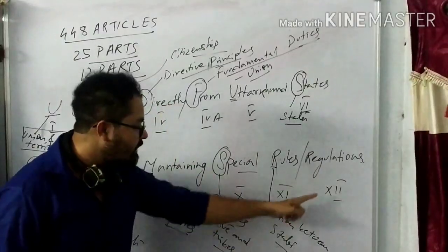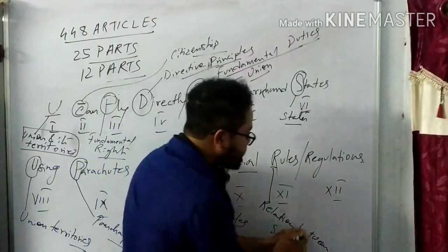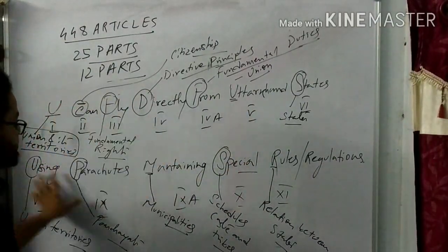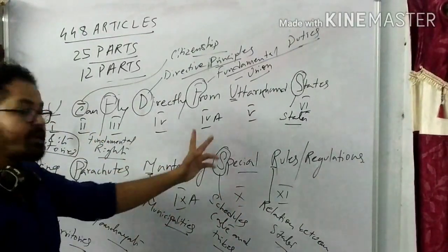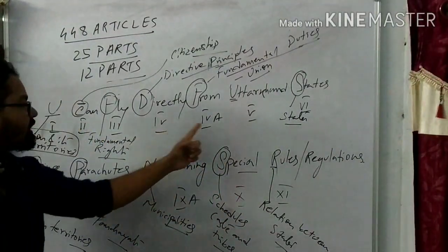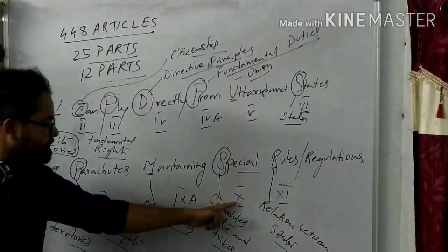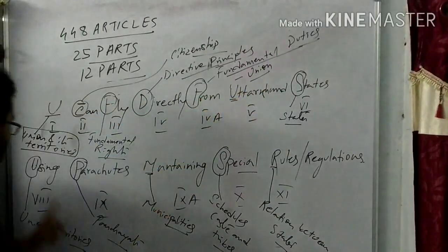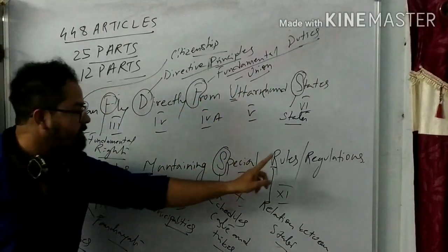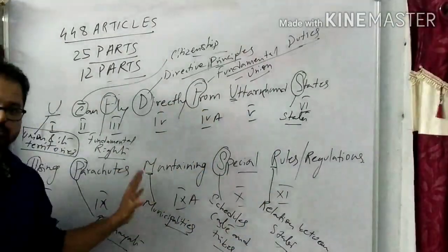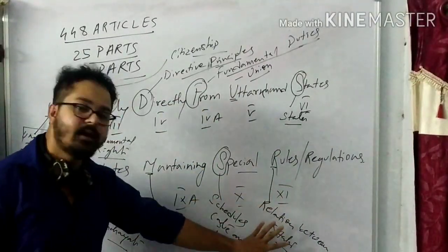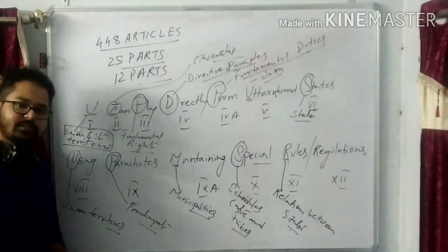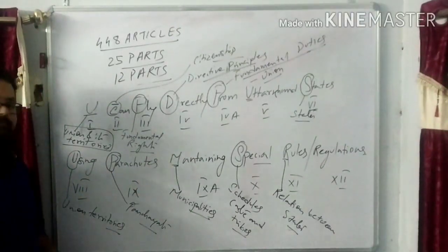So Parts 1, 2, 3, 4, 4A, 5, 6, 8, 9, 9A, 10, 11, 12 - this is the sentence with 12 words for the 12 parts. I'm sure you will understand this. If you can keep it in a screenshot, you will be able to remember it for your work in the future.